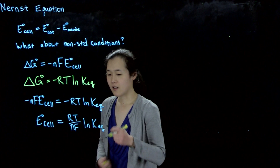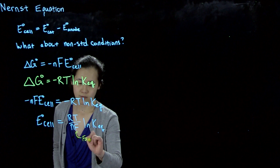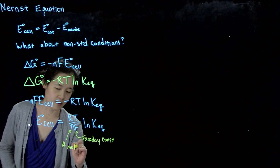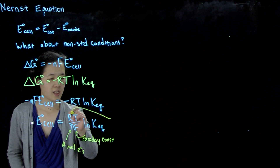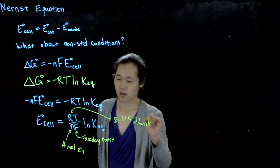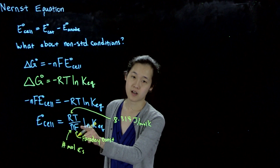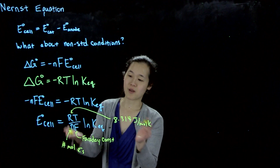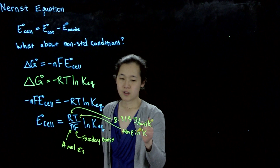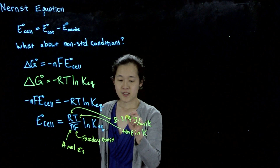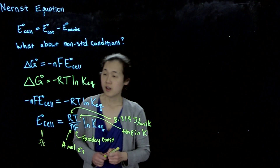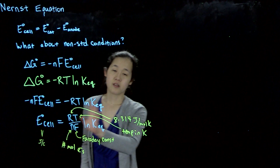Some notes: K is the equilibrium constant, F is Faraday's constant, N is the number of moles of electrons, and R is the gas constant, 8.314 joules per mole Kelvin. These constants — the gas constant and Faraday constant — will be given on your exam, so you don't need to memorize them, but you should know them since you'll be doing calculations with them. Temperature is in Kelvin, and through dimensional analysis we get our result in volts, also known as joules per Coulomb. This is how to convert our standard cell potential into an equilibrium constant.